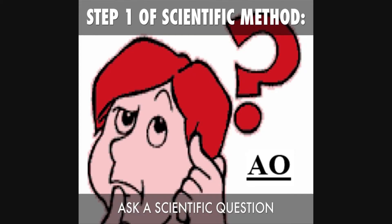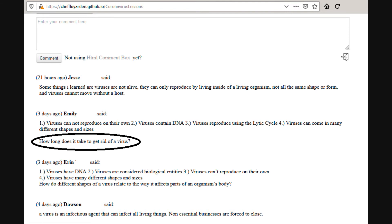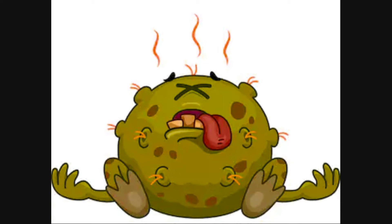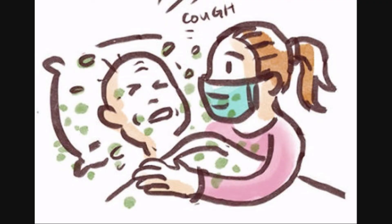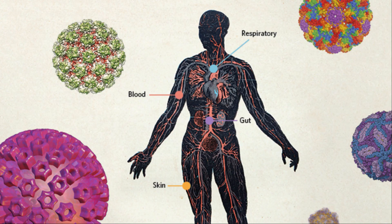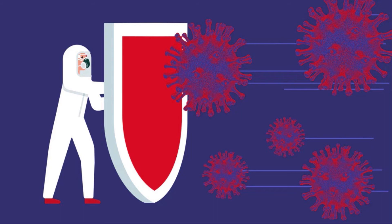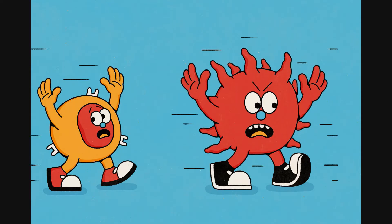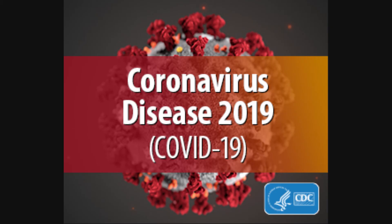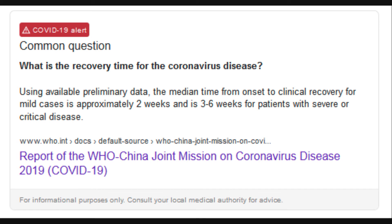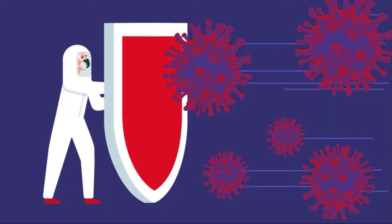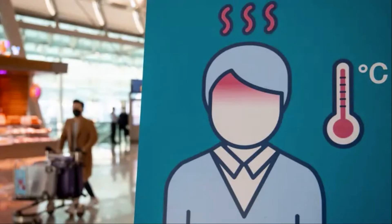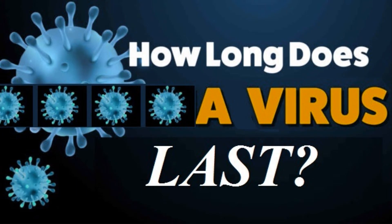To properly answer today's SciFacts question of how long does it take to get rid of a virus, this really depends on the process being used to deactivate the virus. This can happen instantly if using soaps and other chemicals, or it can never happen if a virus has invaded a body with a weak immune system. When it comes to humans and viruses, the amount of time it takes a healthy immune system to get rid of a virus depends on the virus type. If we use the coronavirus as an example, it appears to take about 10 to 14 days for the human body to fight off this infection, but note that this can vary due to the strength of an infected person's immune system. Note also that just because a person has gotten over an infection, this does not mean that the virus has been completely removed from their system just yet.